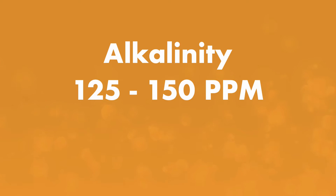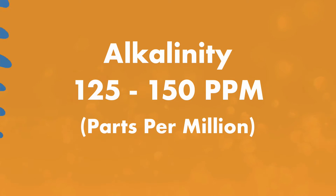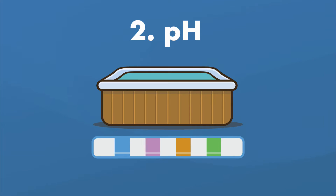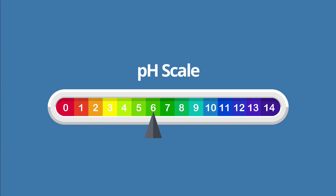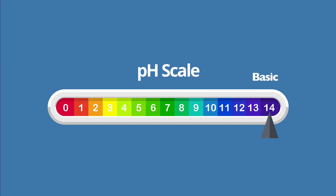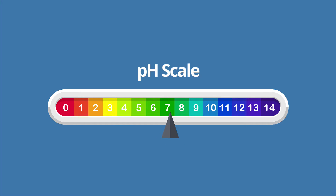You want to aim for an alkalinity level between 125 and 150 parts per million. Then there's pH. As you may remember from high school chemistry, pH measures whether a solution is basic or acidic. The pH scale goes from 0 to 14, with 7 right in the middle being neutral. The lower the pH, the more acidic the water is; the higher the number, the more basic it is. You may want to aim for a pH level between 7.4 and 7.6, with 7.5 being ideal.